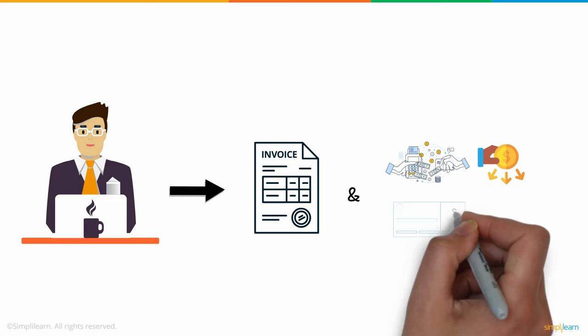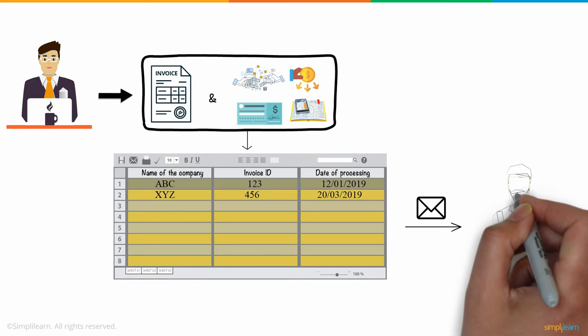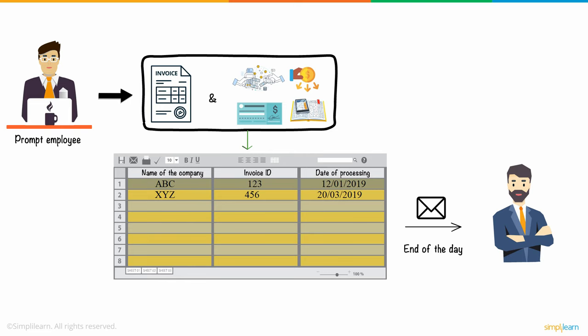One of his tasks is to copy all the relevant information from these invoices — such as the name of the company, invoice ID, and data — processing into a spreadsheet, and mail the sheet, along with other financial reports, to his superiors by the end of the day. As any prompt employee, he transfers all the information to the sheet, attaches the reports, and sends them over to his boss via email every day.